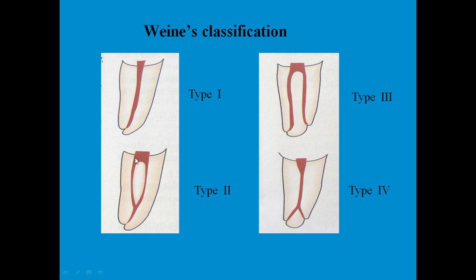Type two has two orifices in the pulp chamber floor, but they unite apically into one apical foramen. Type three has two orifices and two canals that exit separately as two apical foramina. Type four — the most complicated — has one orifice and one root canal which divides at the apical portion into two apical foramina, making it most challenging for an endodontist to treat.